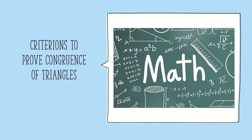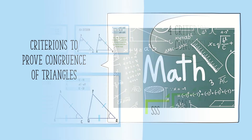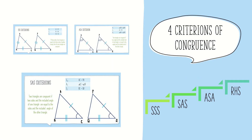Hello everyone, today we are going to study the criterions to prove that two triangles are congruent. So let's start. The four major criterions of congruence are SSS, SAS, ASA and RHS. So let's study them one by one.